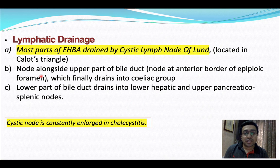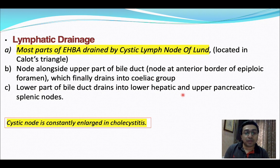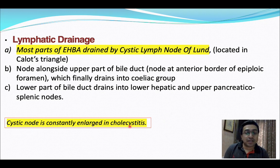For lymphatic drainage, most of the extra-hepatic biliary apparatus is drained by the cystic lymph node of Lund, located in Calot's triangle, and by nodes alongside the upper part of the bile duct and at the anterior border of the epiploic foramen, which finally drains into the celiac group. The lower part of the bile duct drains into the lower hepatic and upper pancreatic-splenic nodes. The cystic node is constantly enlarged in cholecystitis.